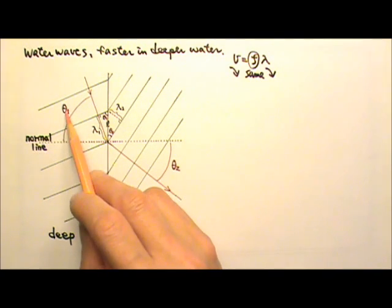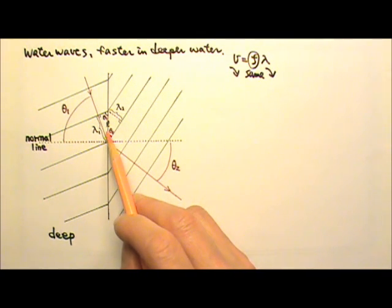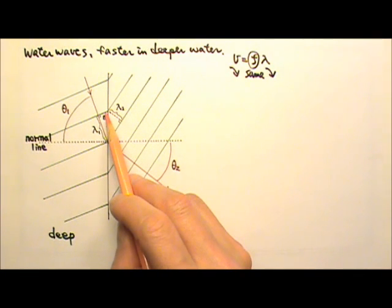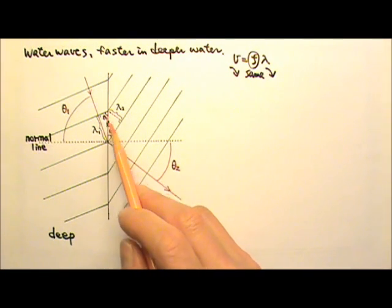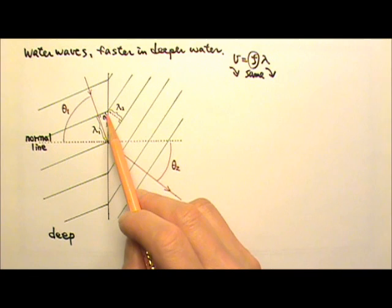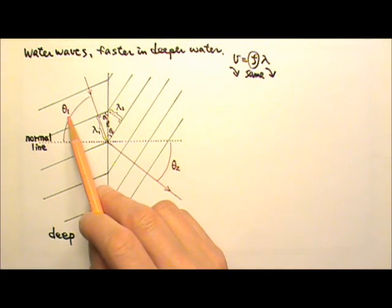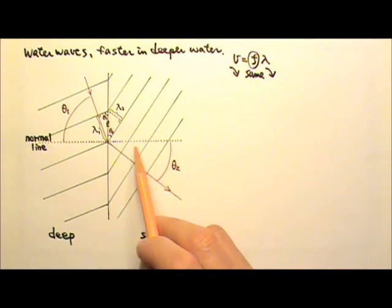Since theta 1 plus this angle equals 90 degrees, and this angle plus that angle is also 90 degrees, that means the angle over there equals theta 1. Same thing here.